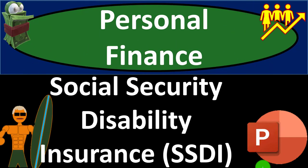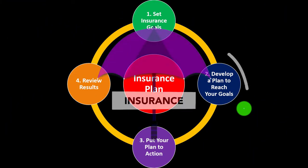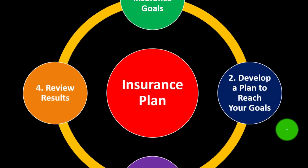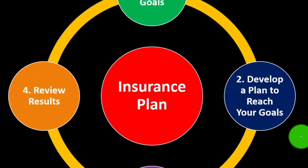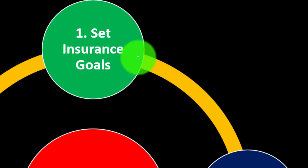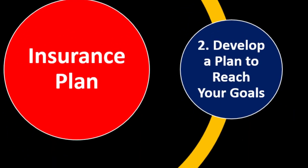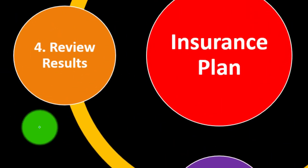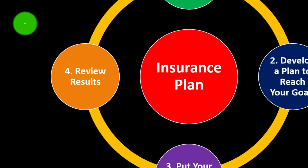This is a personal finance presentation on Social Security Disability Insurance, or SSDI. We prepare to get financially fit by practicing personal finance, where insurance is part of our long-term risk mitigation strategy. We follow the adage of 'measure twice, cut once,' putting a formal process in place: set the goals, develop a plan to reach them, put that plan into action, review the results, and repeat the process periodically.